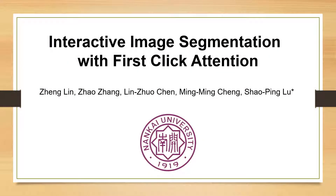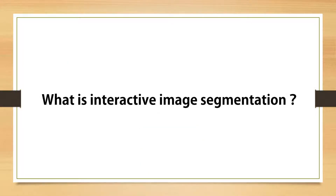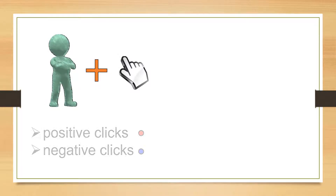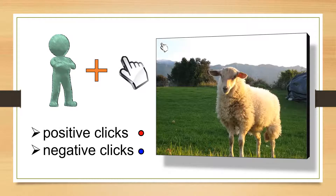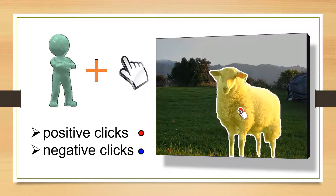Interactive image segmentation with first-click attention. Interactive image segmentation is a task where users take interactions with positive and negative clicks to segment an instance. Here is an example.